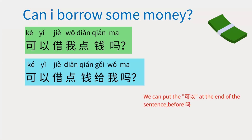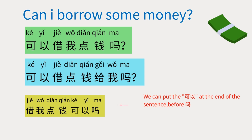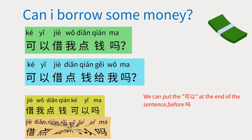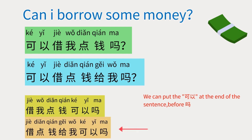We can put 可以 at the end of the sentence before 吗。For example: 借我点钱可以吗？借点钱给我可以吗？